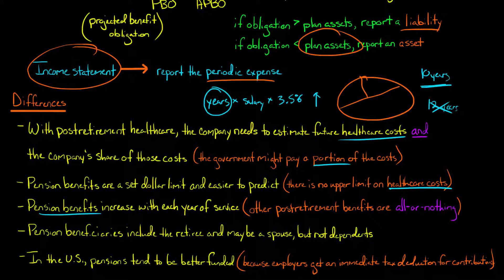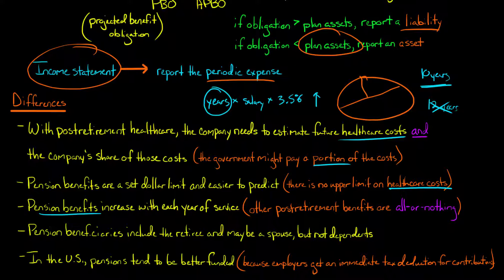In terms of beneficiaries, when it comes to a pension plan, we're talking about the monthly income that the retiree is going to get. Sometimes if the retiree dies, their spouse might be entitled to continue receiving a portion of the payments, but generally not dependents like their children under a pension plan. However, under other post-retirement benefit plans like healthcare, there might be cases where not only the retiree and their spouse, but also potentially their children in some cases might qualify for healthcare coverage from the company.